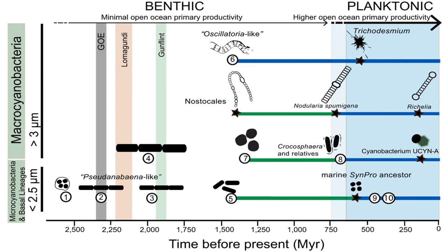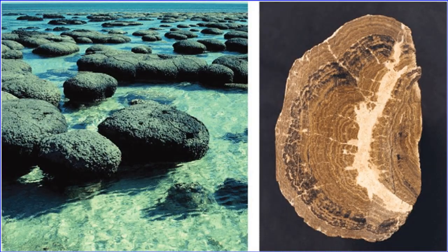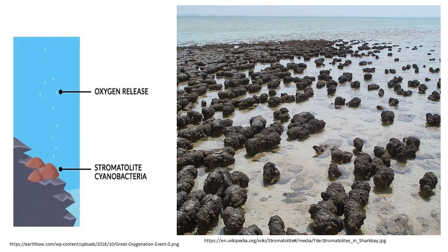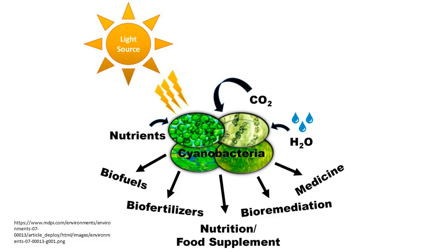Cyanobacteria are the first organisms to have produced oxygen. By producing and releasing oxygen as a byproduct of photosynthesis, cyanobacteria are thought to have converted the early oxygen-poor reducing atmosphere into an oxidizing one — called the Great Oxidation Event and the rusting of the Earth — which dramatically changed the composition of the Earth's life forms.